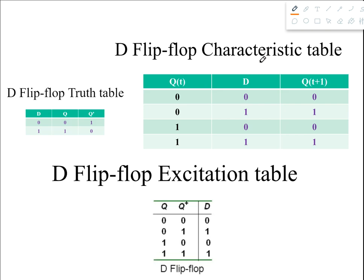Now we'll build the characteristic table of D flip-flop using its truth table. In the characteristic table there are two parts: on the left we write the flip-flop input and the present state Q(t), and since the only input is D we have two variables, giving four combinations: 0,0 — 0,1 — 1,0 — 1,1. On the right side we write the next state Q(t+1).